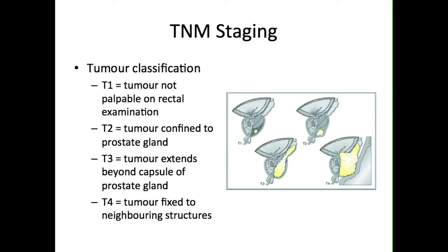Prostate tumours can be staged using the TNM classification. T1 tumours are not palpable on digital rectal examination, whereas T2 tumours are those confined within the capsule of the prostate gland. Tumours that extend beyond the capsule are classed as T3 tumours, whilst T4 tumours are those fixed to neighbouring structures. T3 and T4 tumours are more likely to have metastasised to the pelvic lymph nodes and/or via haematogenous spread to the pelvis and vertebral column.